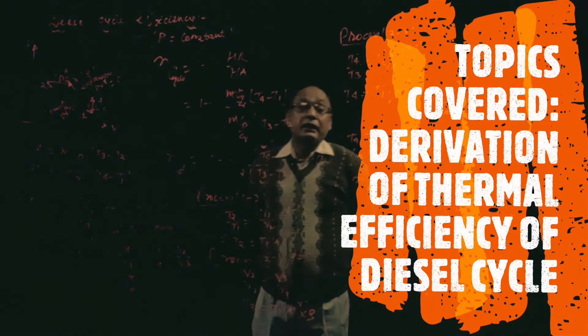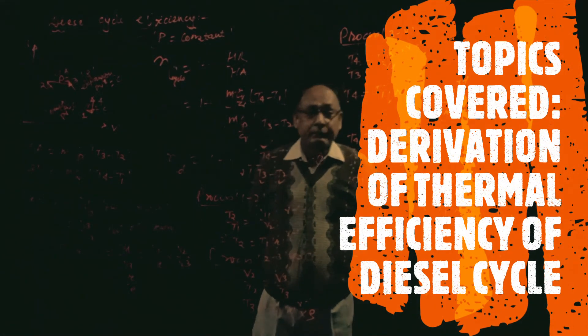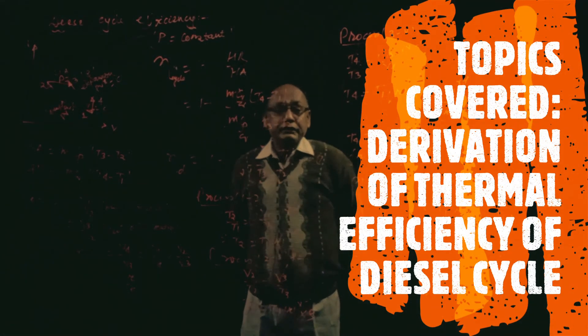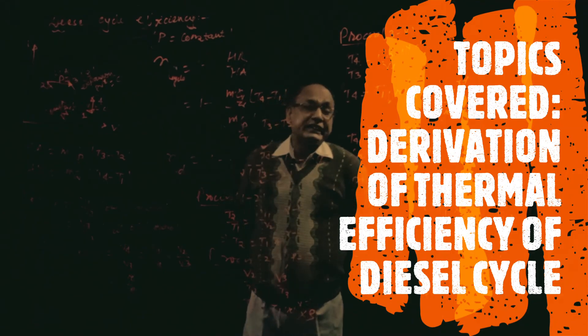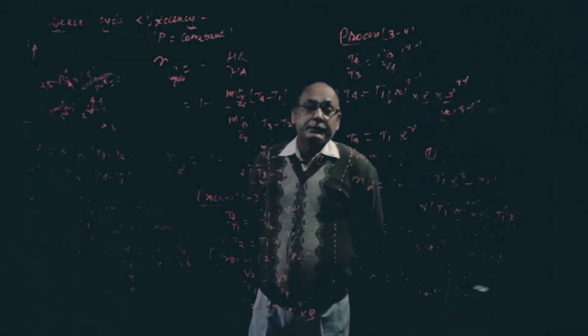This is similar to the otto cycle up to the first term. What we add for the diesel cycle is (Rho^gamma minus 1) in the numerator and gamma·(Rho minus 1) in the denominator of the negative term. Otto cycle and diesel cycle are finished; dual cycle will be completed in the next class. Thank you.